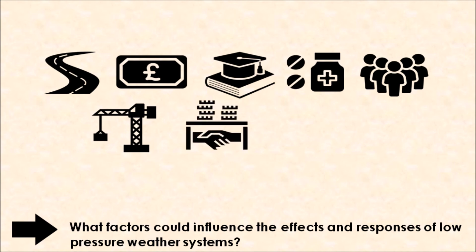We also have to factor in government corruption. Countries with corrupt governments may receive charity money and aid from various organizations to help victims of low pressure weather systems, but a corrupt government will divert that money and not distribute it to the people or areas that need it most. Unfortunately, this can again result in an increased number of casualties and fatalities.